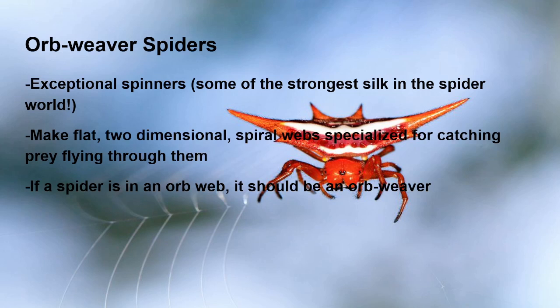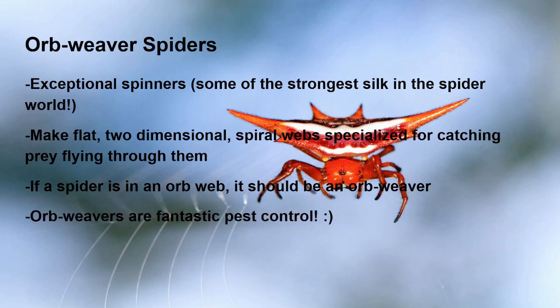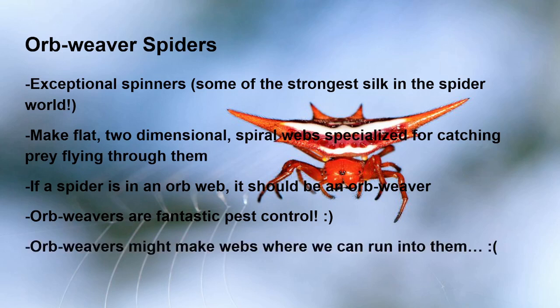These webs that we all think of as the typical shape of a spider web are really unique — not all spiders make these types of webs. If a spider is in an orb-shaped web that is suspended in the air and looks like it's meant to catch things flying through it, that is an orb web made by an orb weaver spider. Orb weaver spiders are fantastic pest control because they eat all of these flying insects. They also might make webs in places where we can unfortunately run into them — I myself have at least one memory as a child of accidentally running into an orb web, and it was not a fun experience for myself or the spider.